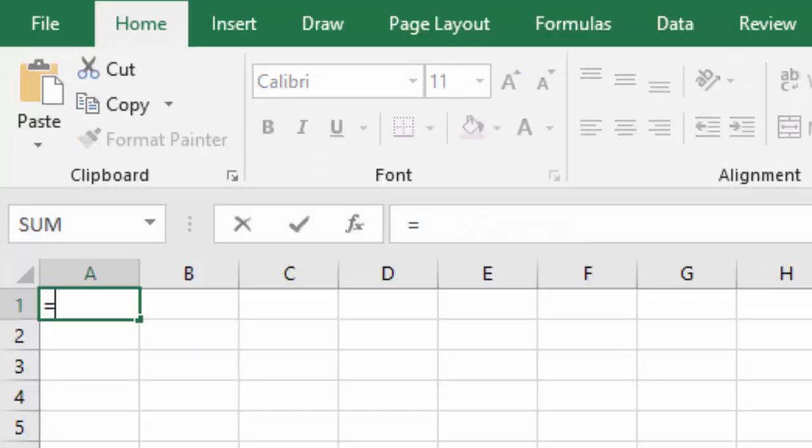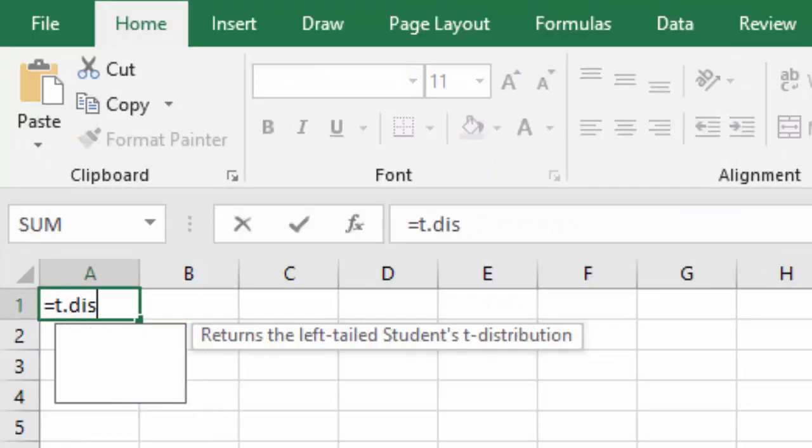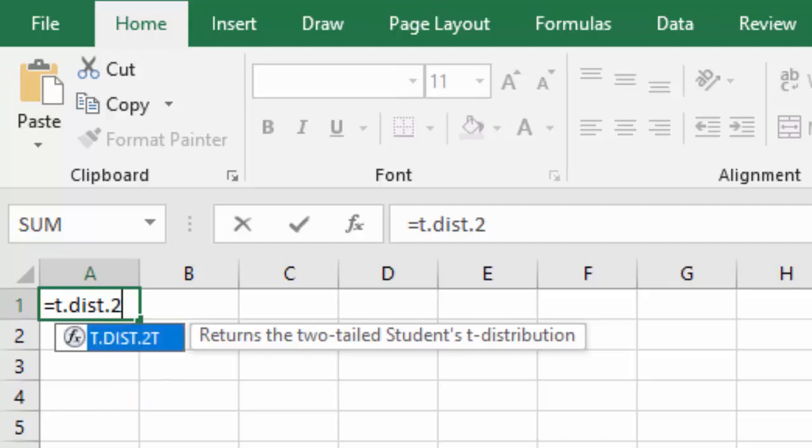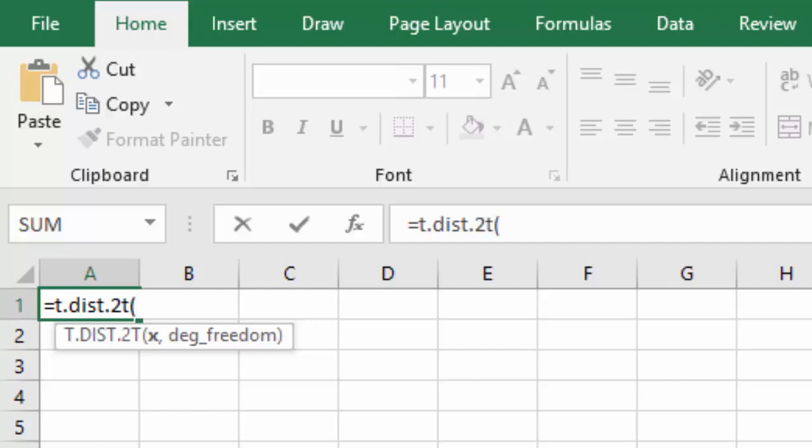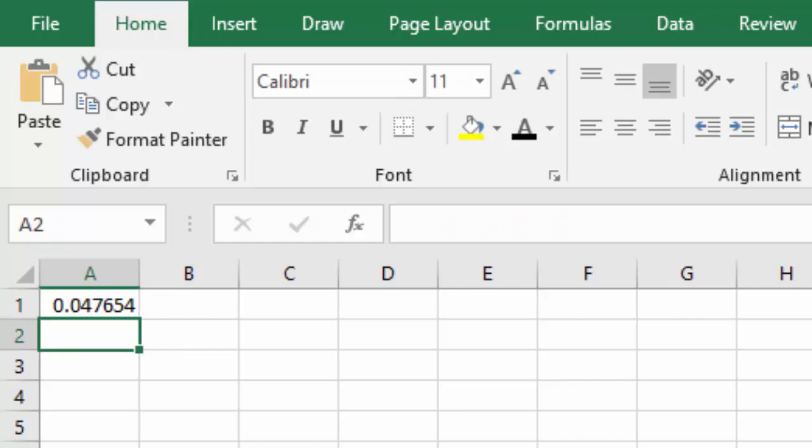On Excel, we can say equals t.dist.2t for the two tails, open a parenthesis, x is 2.11, comma, the degrees of freedom are always one less than the sample size. We said there were 21 patients, so the degrees of freedom, one less than that, is 20. And when we hit enter, we find out we get a p-value of 0.0477.